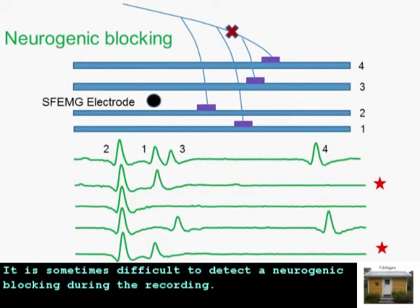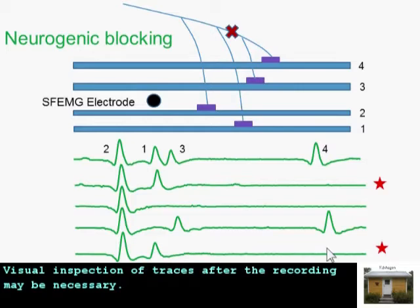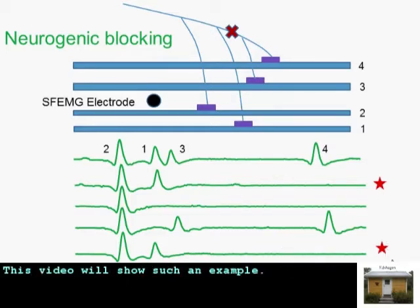It is sometimes difficult to detect neurogenic blocking during the recording. Visual inspection of traces after the recording may be necessary. This will show such an example.